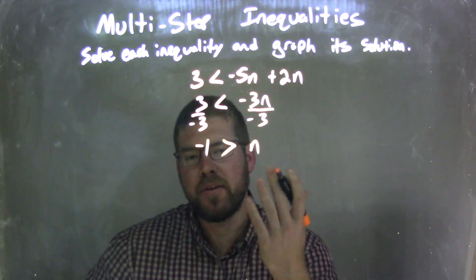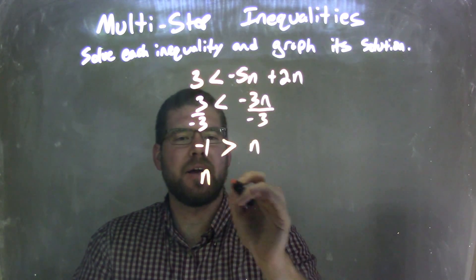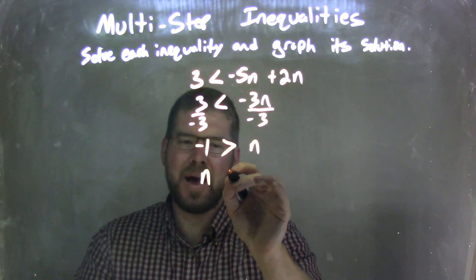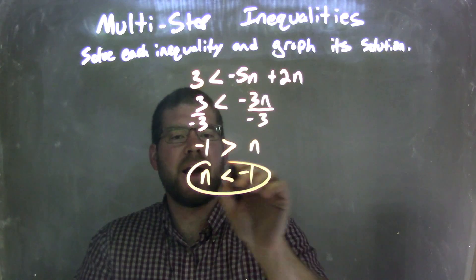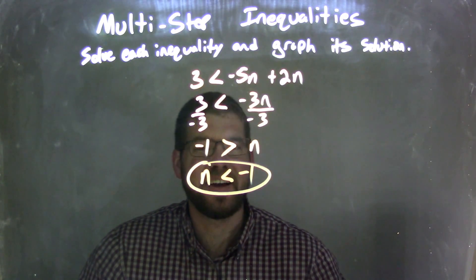Now, I need to rewrite this. I have n come first. So to do that, n comes first. I flip the inequality sign back over less than negative 1. And there we have it. We have n isolated by itself, and it's less than negative 1.